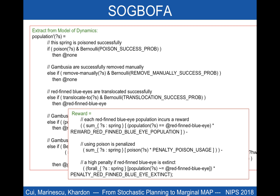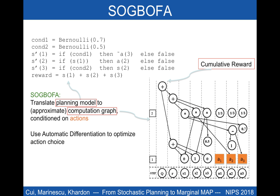Sugbofa takes as input a symbolic representation of the domain model, as in the example taken from a recent planning competition, or the toy problem on the top left of this slide. Sugbofa translates the model to a computation graph as shown on the bottom right, where action variables — the orange nodes — are symbolic inputs, and one node represents an approximation of the cumulative reward.